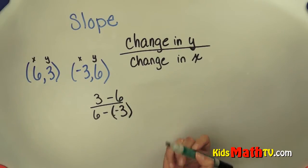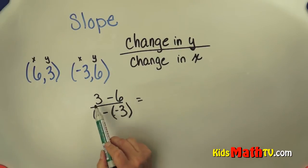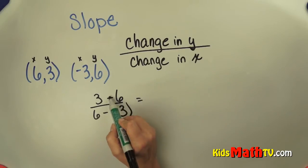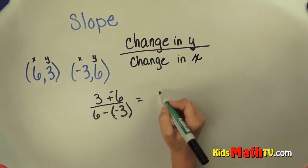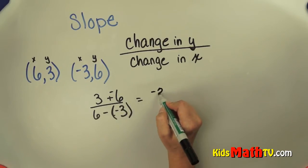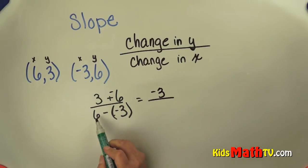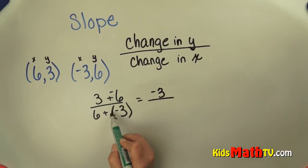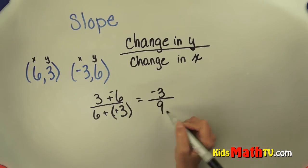So now I can simplify this. 3 minus 6 is the same as adding a negative 6, which is negative 3, over — 6 minus a negative is the same as adding a positive — giving us negative 3 over 9.